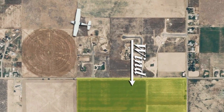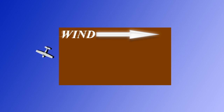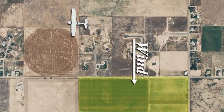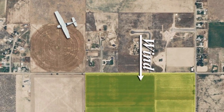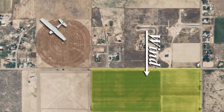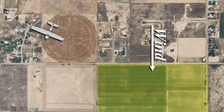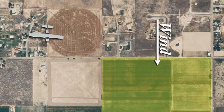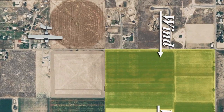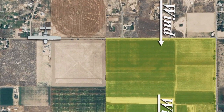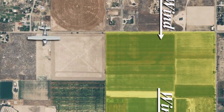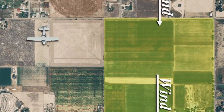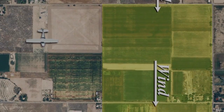Remember, on the crosswind side, make sure you crab into the wind so you don't get blown off course and remain parallel. When you have reached the downwind section of your rectangle, begin your turn. Since you are crabbing into the wind, your turn should be greater than 90 degrees. As the tailwind increases, you will want to increase your angle of bank to maintain an equal distance from the side of the rectangle.